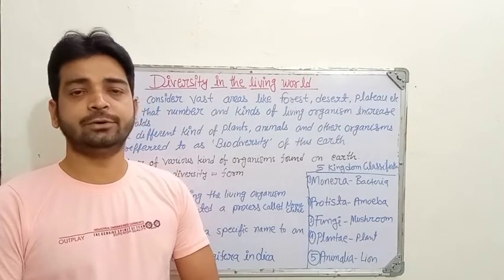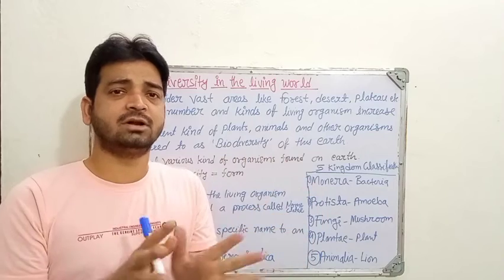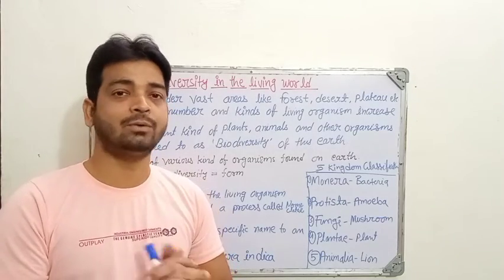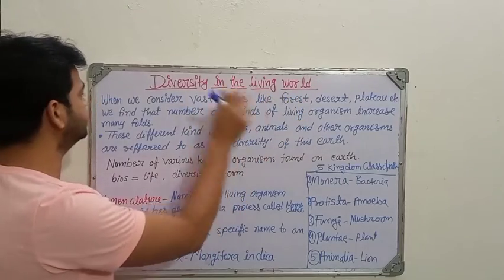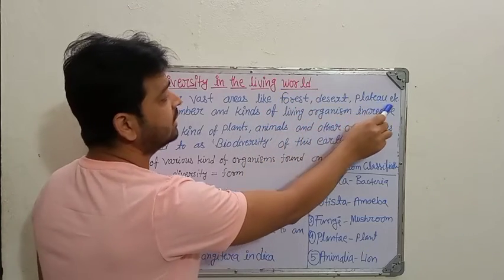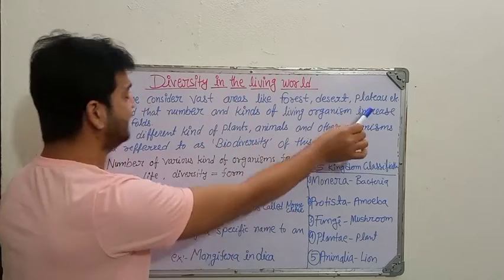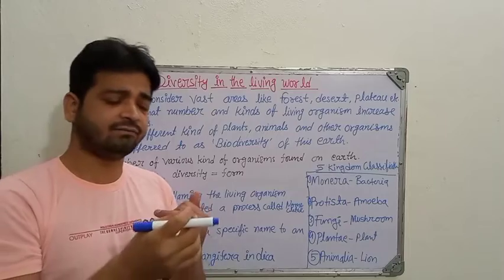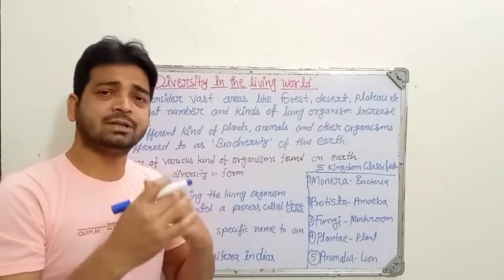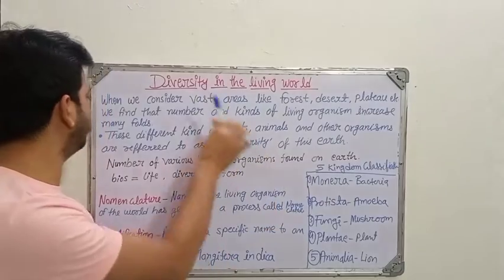In this second class of remedial biology, we are going to discuss the diversity of living organisms. When we talk about diversity, it means the network of living organisms — we cannot even imagine what types exist on Earth. When we consider a vast area like a forest, desert, or any habitat, we find that the number and kinds of living organisms increase many folds, ranging from ants, microorganisms, bacteria, fungi, insects, animals, snakes, reptiles, vertebrates, and invertebrates.